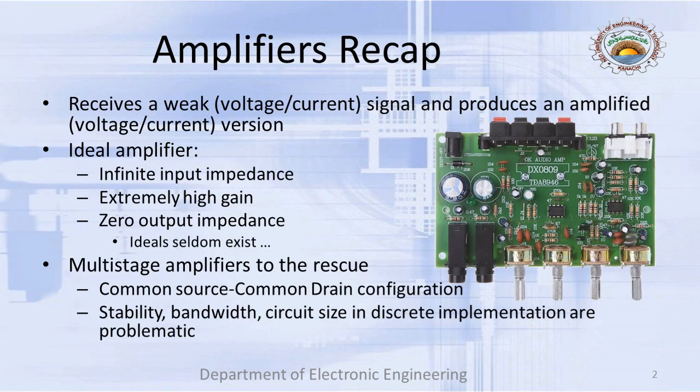A little recap of the amplifiers. What is an amplifier supposed to do? It receives a weak signal — that signal can be in the form of voltage or current — and then it produces an amplified version of it at the output. That amplified version again can be in the form of voltage or variations in current. Just for the sake of demonstration, an audio amplifier card is shown here.